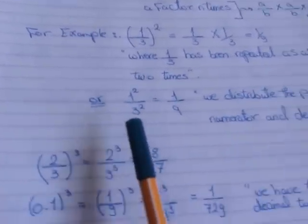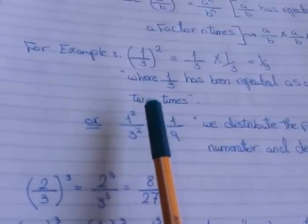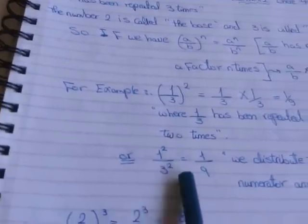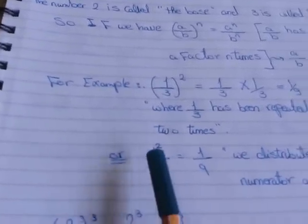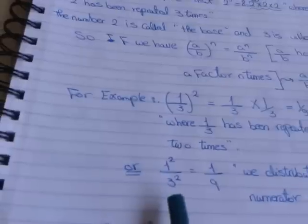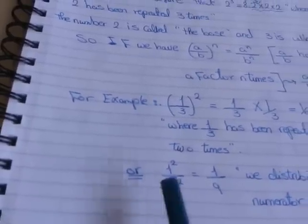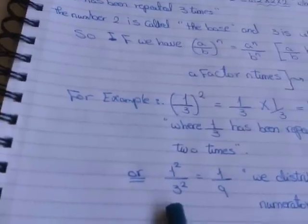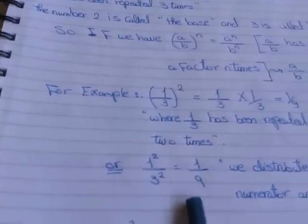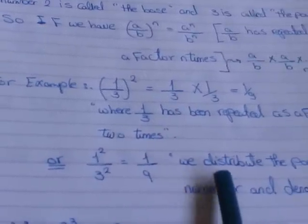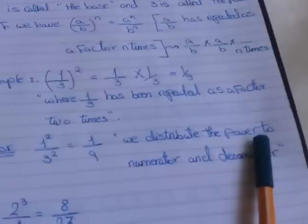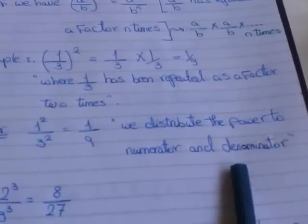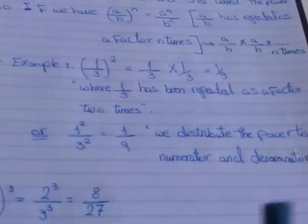Or, I will distribute the power 2 to 1 and 3: 1 power 2 equals 1, and 3 power 2 equals 9. So we distribute the power to the numerator and the denominator.